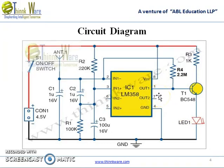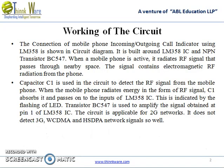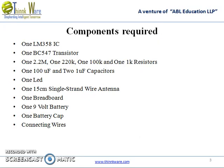This circuit is applicable only for 2G networks, not for 3G, WCDMA and HSDPA network signals. The components used in this circuit are: 1 LM358 IC, a BC547 transistor, a 2.2M, 220K, 100K and 1K resistor, a 100μF capacitor and a 2μF capacitor, a LED, a single strand wire antenna, a breadboard, a 9V battery, a battery cap and connecting wires.